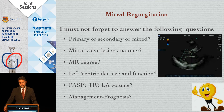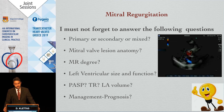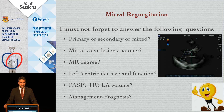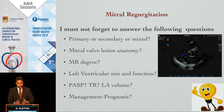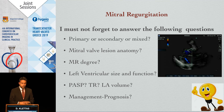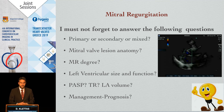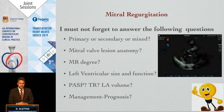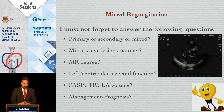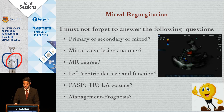Once we investigate mitral regurgitation, we must definitely distinguish if it is primary or secondary, what is the mitral valve lesion anatomy, what is the MR degree, what is the left ventricular size and function, what are the pulmonary pressures, the tricuspid regurgitation, the LA volume, and finally to report the management and the prognosis.